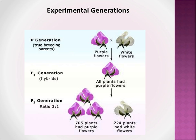Here's a famous genetics experiment that shows three different generations of plants: the P generation, the F1 generation, and the F2 generation. The P generation consists of true breeding or purebred parents of opposite alleles. So in this case, the purple flower would have to be homozygous dominant, and the white flower — the opposite phenotype — would have to be homozygous recessive.